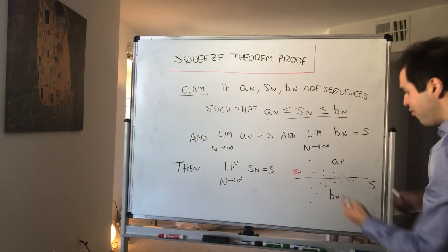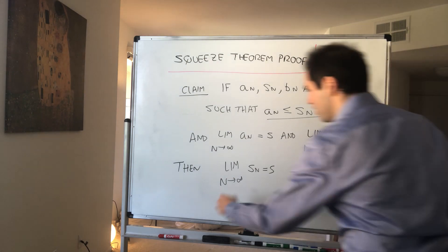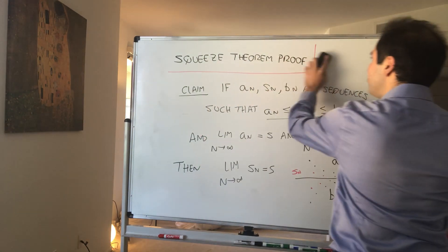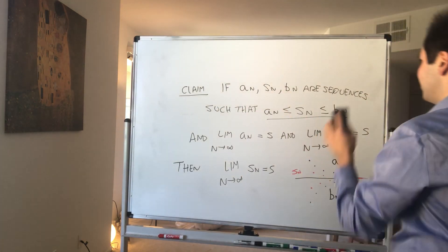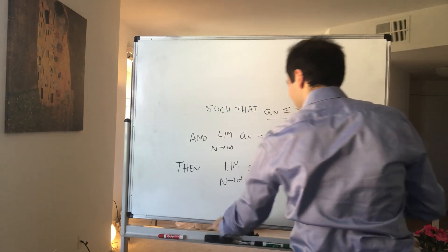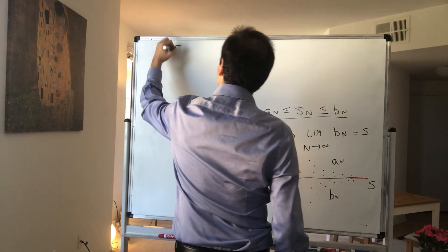Then this forces s_n to also converge to s. Okay, and how do we prove this? It's a very nice exercise in the definition of a limit. So let epsilon be given.